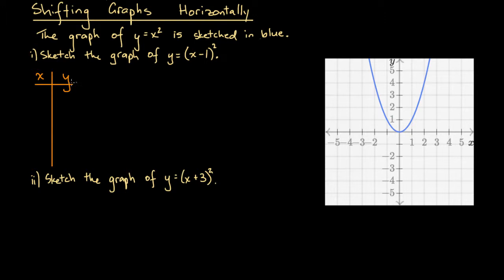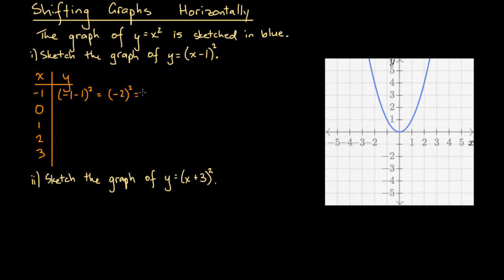Let's evaluate this function for x values of minus 1, 0, 1, 2, and 3, and then plot them on the graph. At x equals minus 1, we have y equals (minus 1 minus 1) squared, which is (minus 2) squared. Negative 2 times negative 2 — negative times negative is positive, and 2 times 2 is 4. So y equals 4.